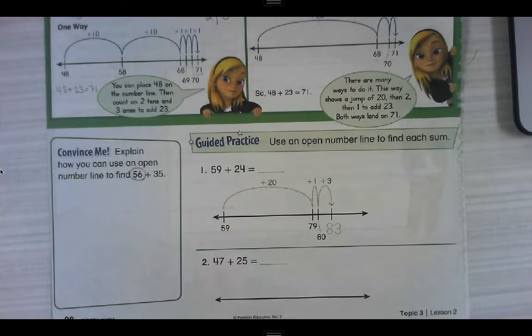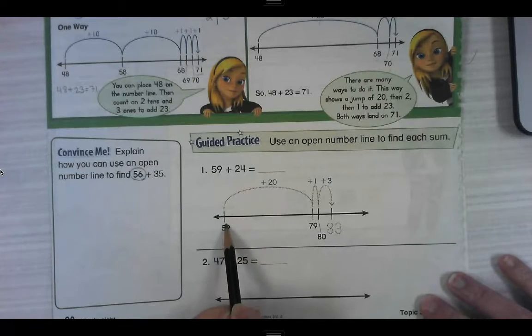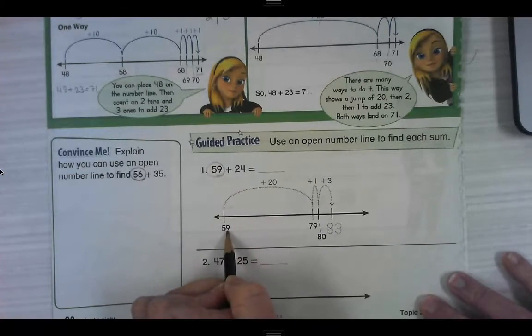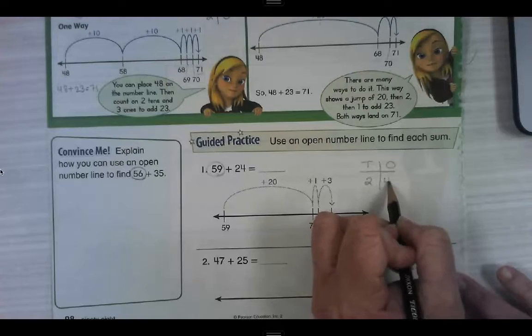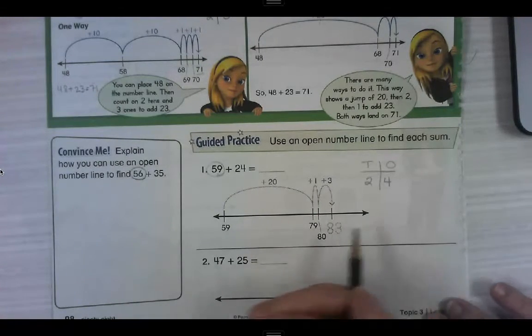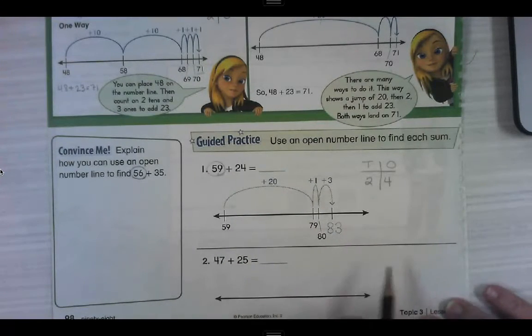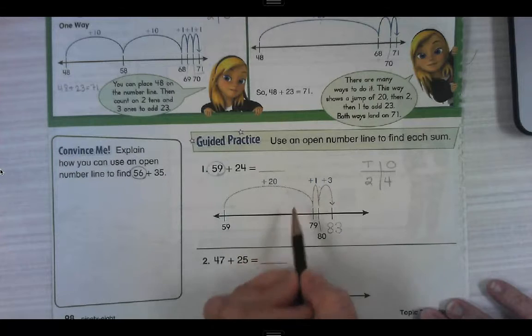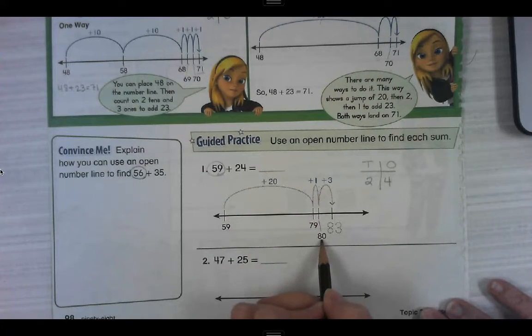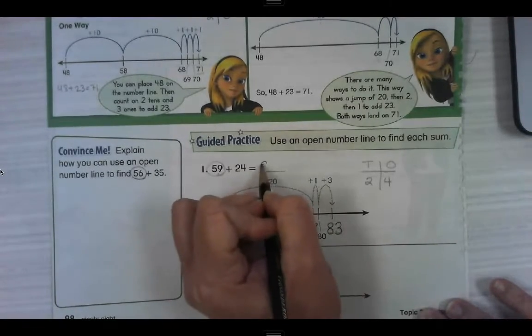All right. Let's do our guided practice together. The directions say use an open number line to find each sum. The first one has worked for us. So we're doing 59 plus 24. We've got 59. It's the greater addend. It's already on our number line. And 24 has two tens, four ones. We've used that number several times today or something similar. 59 plus 20. They broke it up. They just did all of the tens at one time. Plus one plus three. One plus three, that's four. So 24. Four. 79 plus one is 80. Plus three more is 83. 83.